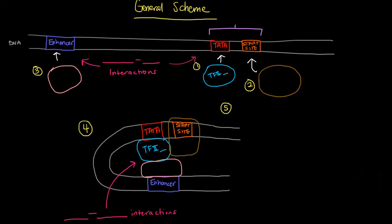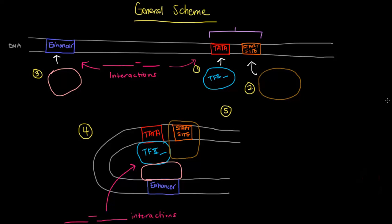So let's think about this general scheme here that I've drawn out. So if we imagine a DNA strand like this, and it has a TATA box and a start site, which make up the promoter region, and we have an enhancer that's pretty far away, how would this enhancer enhance or increase the rate of transcription?